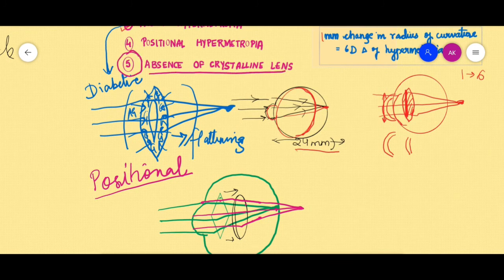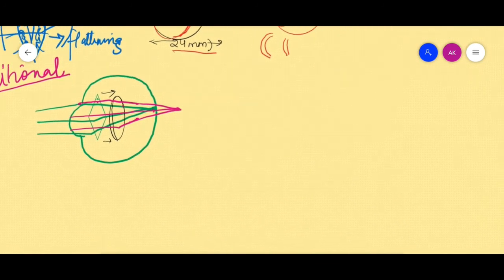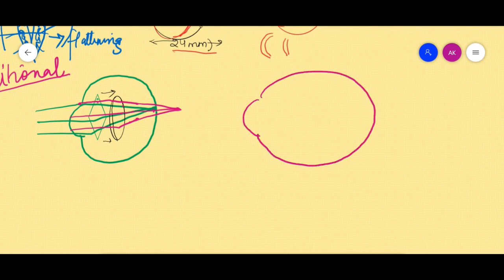hypermetropia because of the absence of crystalline lens. This is also very simple. In the previous video I told you that a hypermetropic eye is actually a weaker eye when it comes to converging the light rays and bringing them onto the retina. And what are the main parts of the eye which are